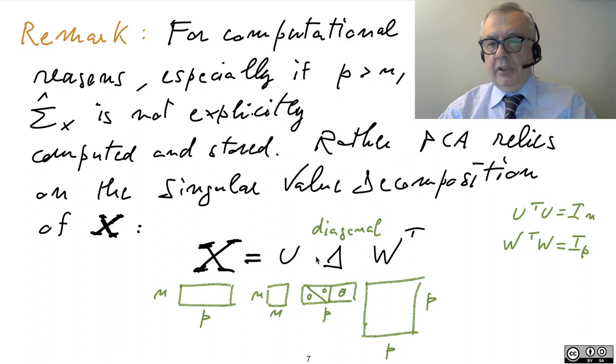What is singular value decomposition? You can show that given matrix X, which is rectangular, of course, you can always find orthogonal U and W matrices such that X can be written as U, delta, W transpose, where delta is a rectangular, diagonal matrix.